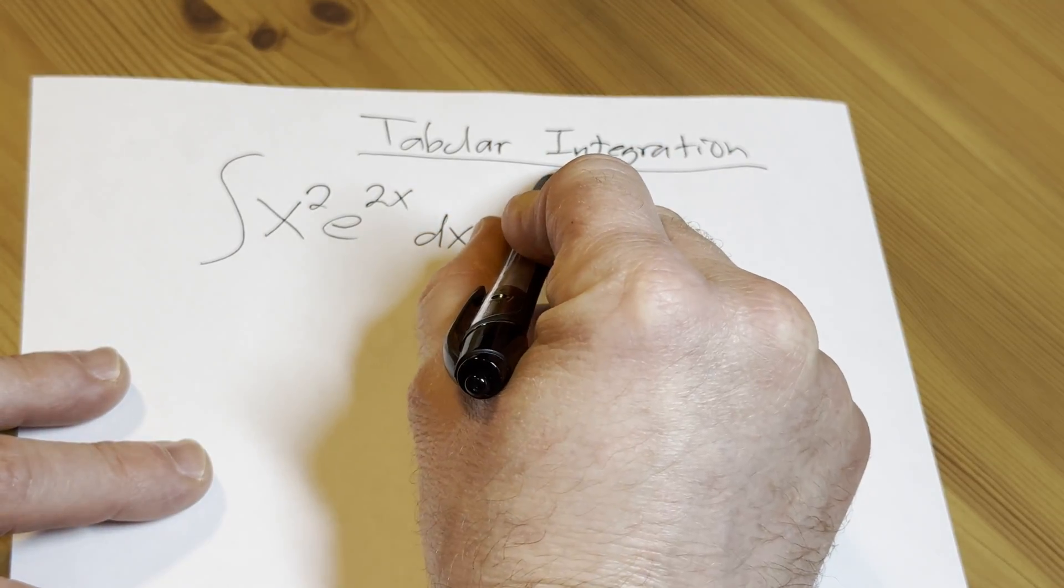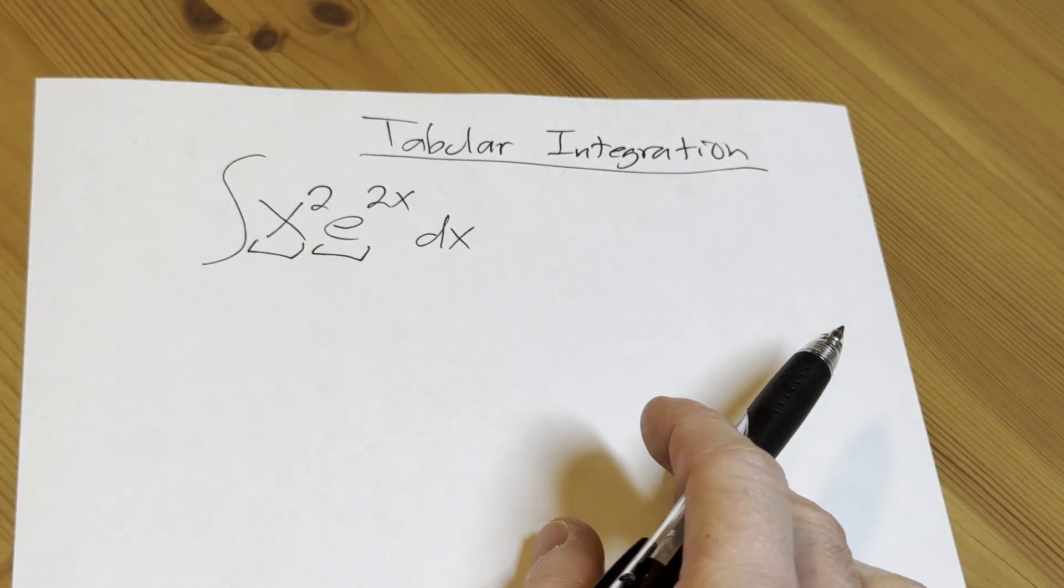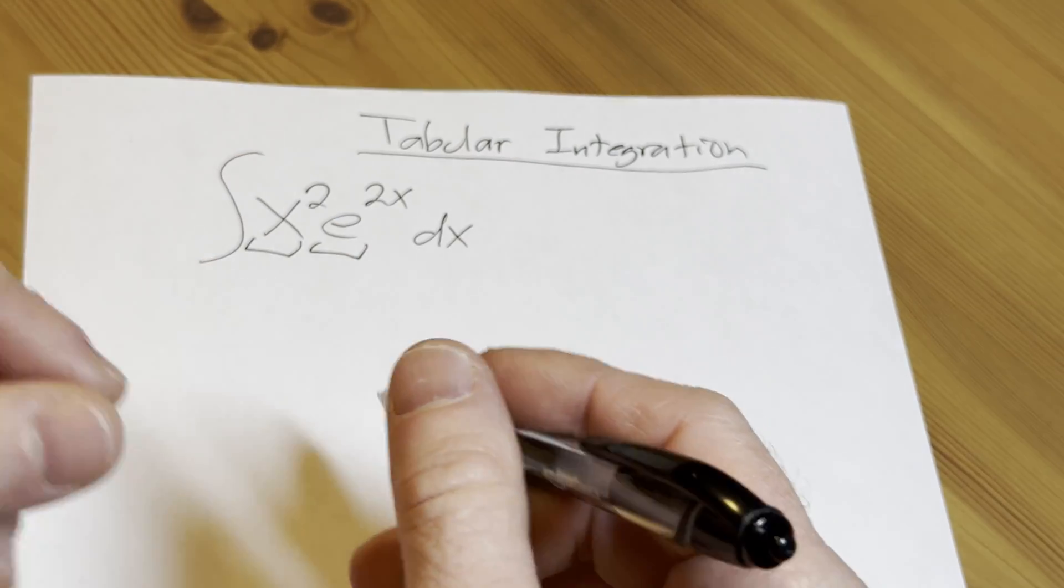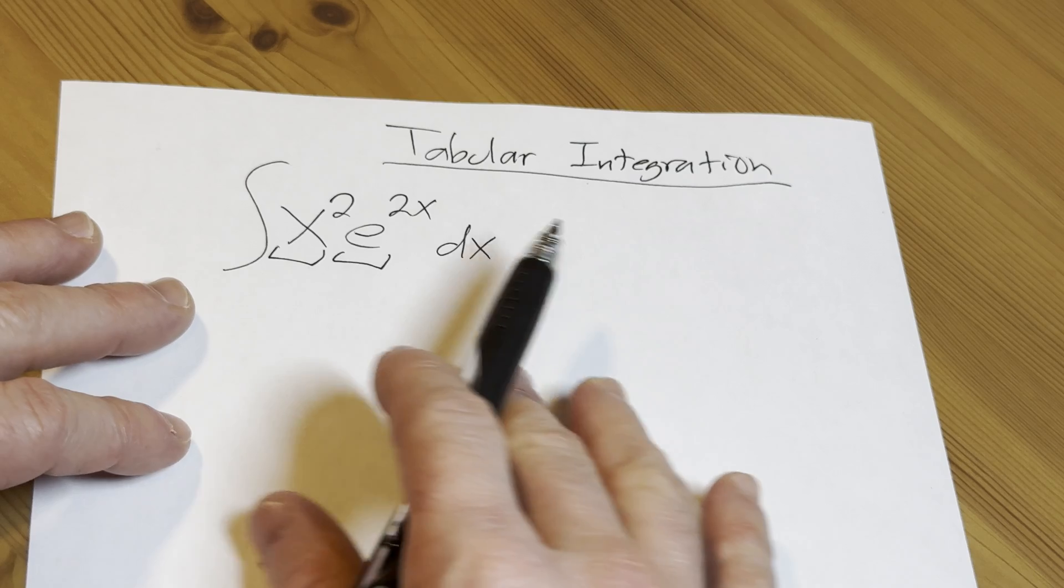You basically want to use this when one of the factors in your integrand is eventually zero after repeated differentiation, and the other factor you have to be able to integrate. If you do both of those things, you can use tabular.